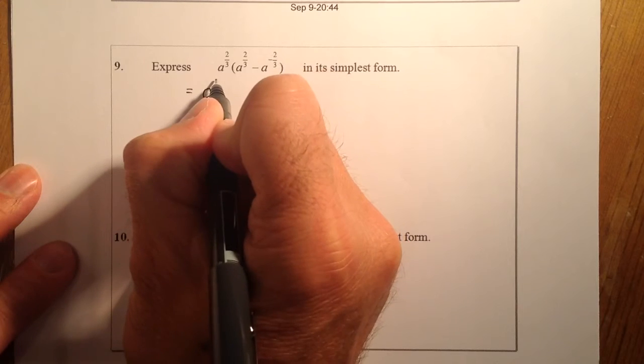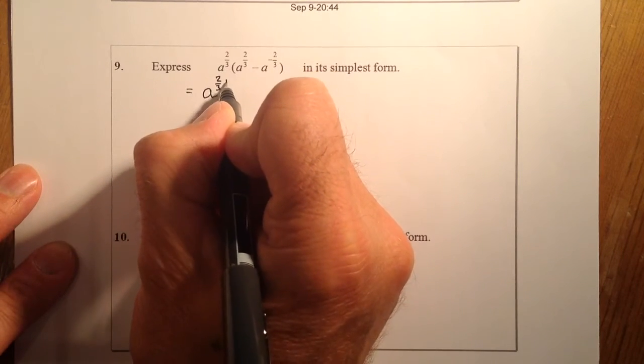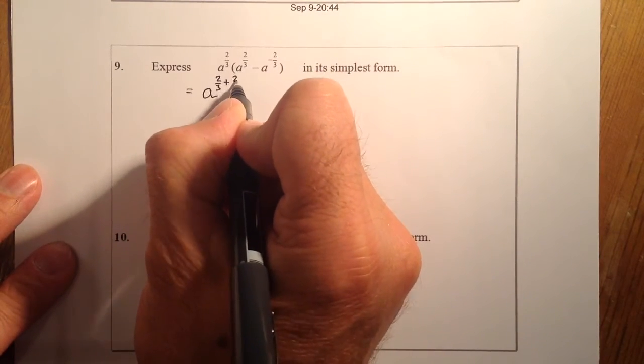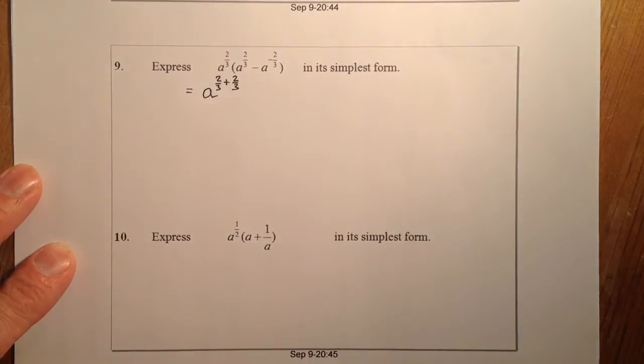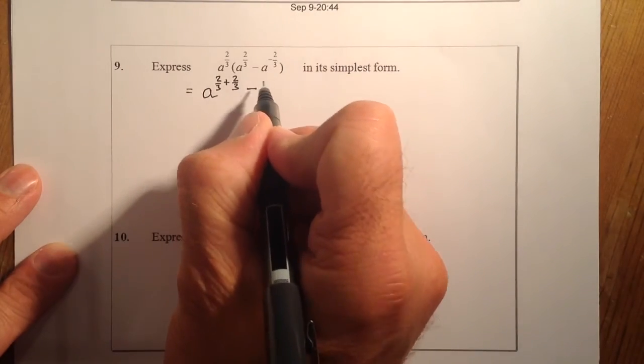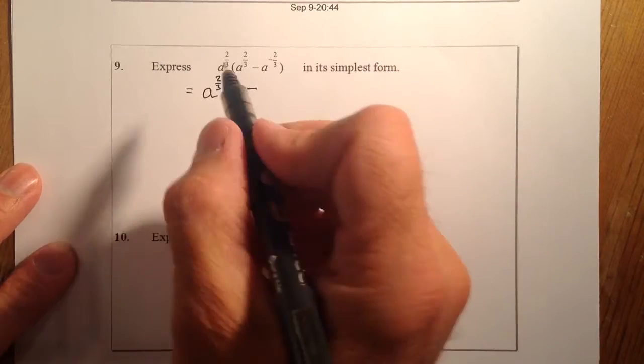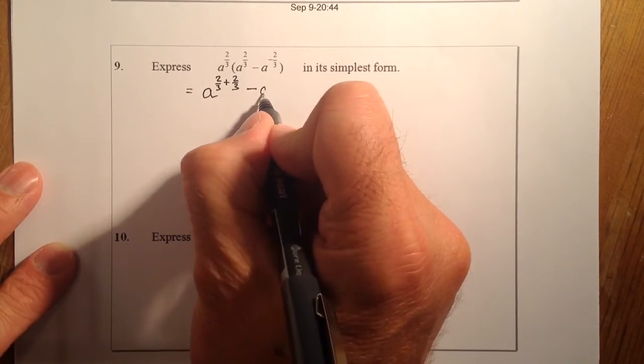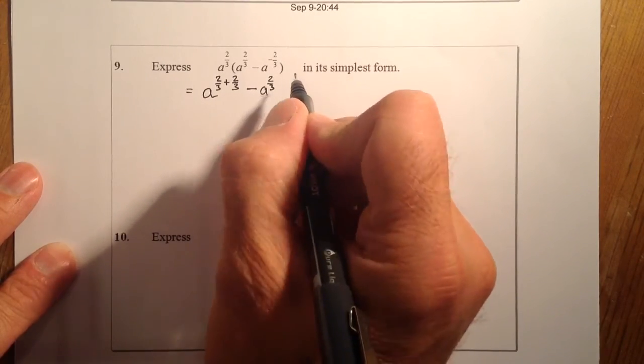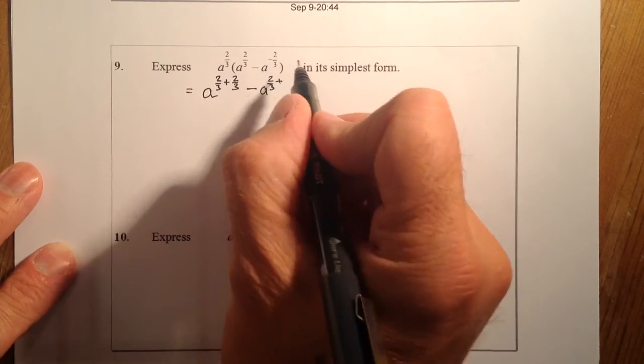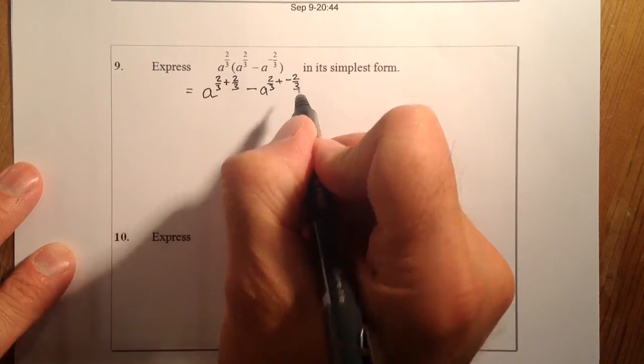So I've got A to the power of 2 over 3, which is this one. I'm going to add on to that 2 over 3. I've got a subtraction sign that's in between here, and then I've got a to the power of 2 upon 3. What I'm going to do is I'm going to add on to that minus 2 upon 3.